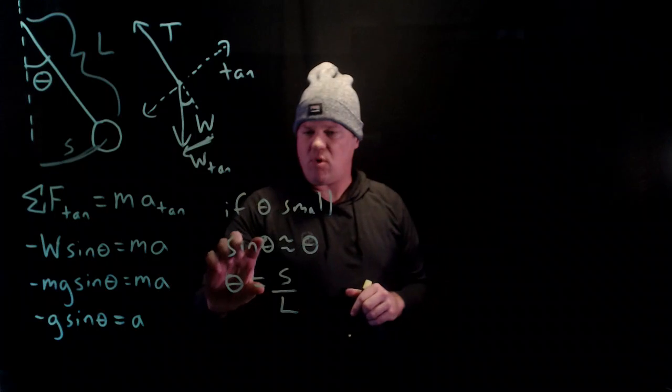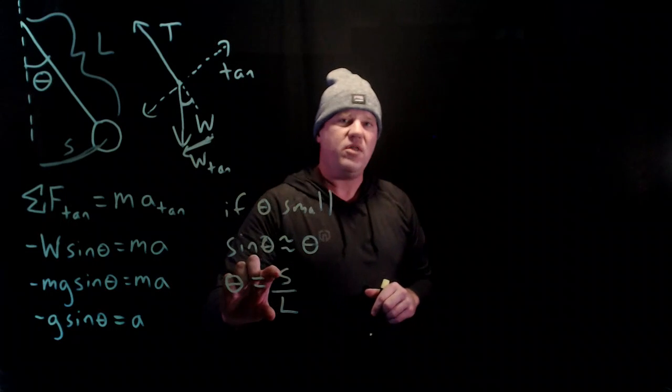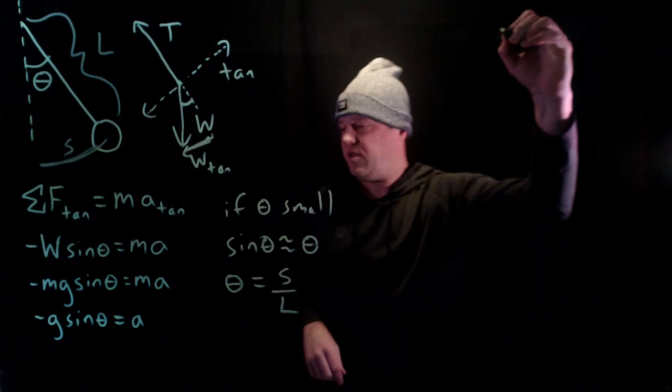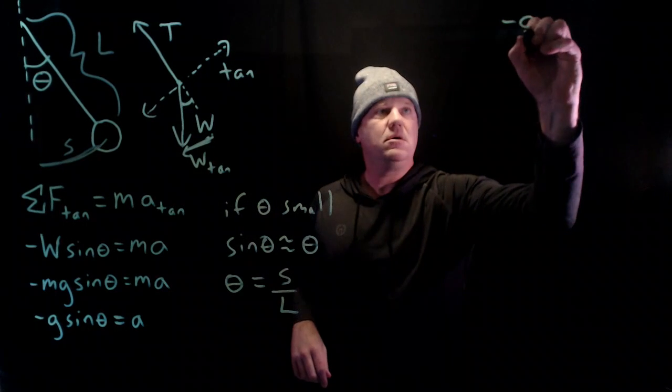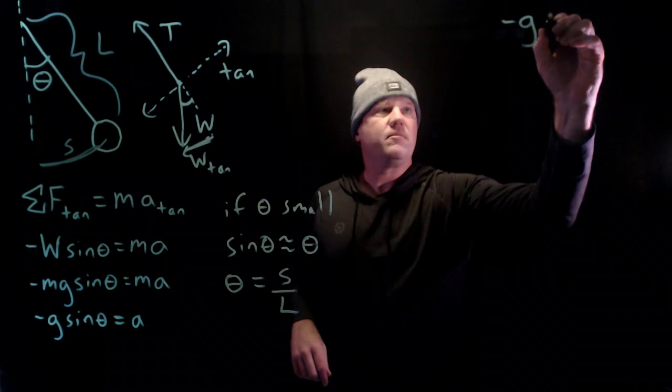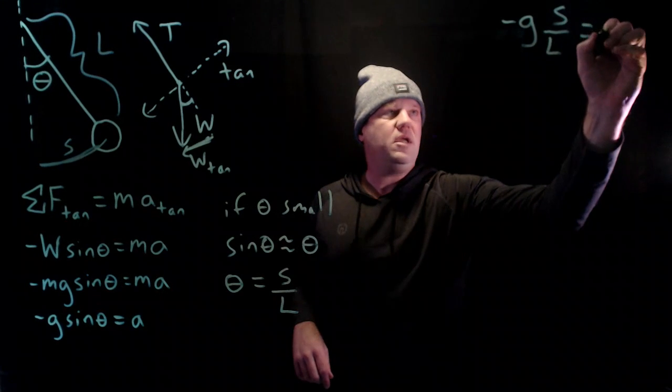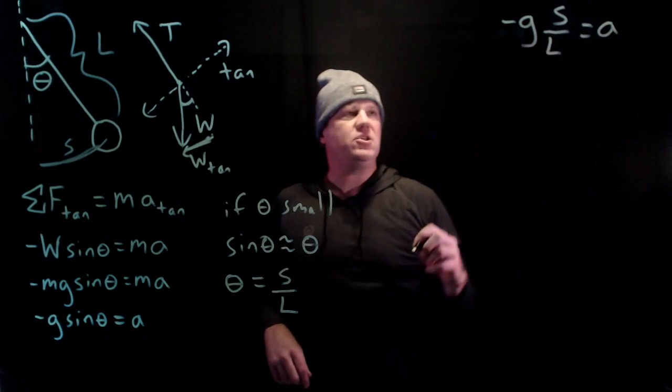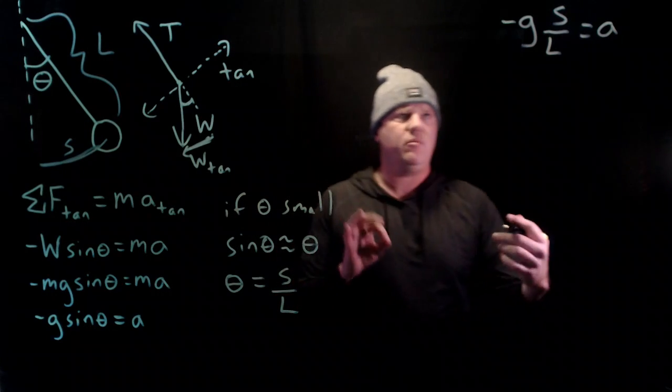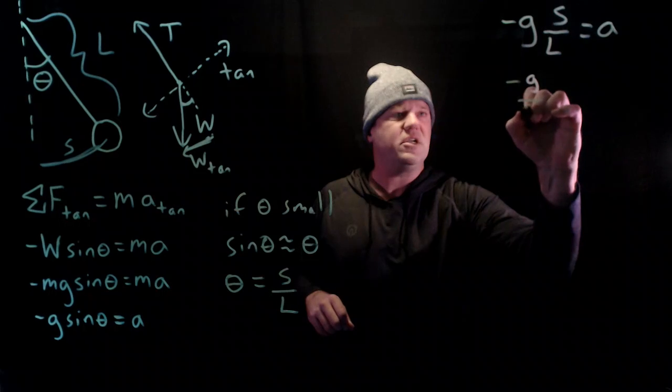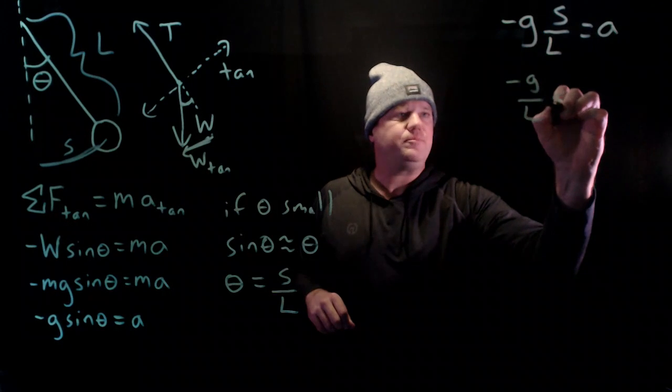So instead of sine theta, I'm going to replace sine theta with the arc length over the radius. So I end up with minus little g, S over L equals the acceleration. And typically what we'll do is we'll rearrange this, lump the constants together. So g and L are constants, and I end up with this.